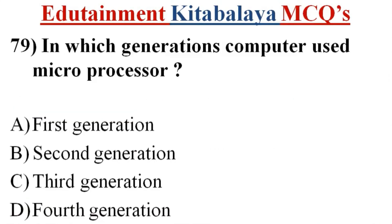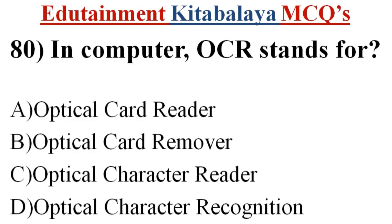Question number 79. In which generation did computers use microprocessors? A. First generation. B. Second generation. C. Third generation. D. Fourth generation. Correct answer is D. Fourth generation.